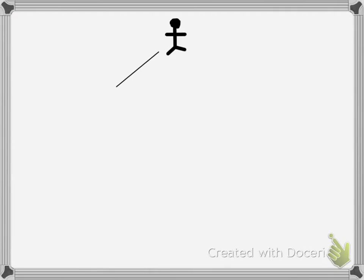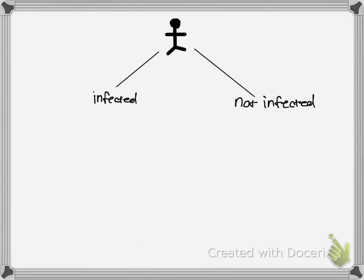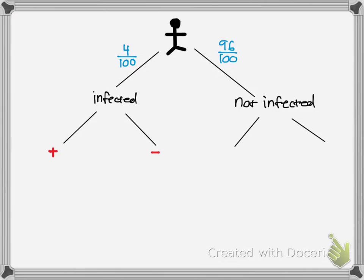So here's the individual, and they either have the disease or they don't — they're infected or not. The prevalence is 4 in 100, so there's a 4 in 100 chance of being infected, which means 96 out of 100 people do not have the disease. On both sides of the tree, if you take the test and you're infected, you can have a positive or a negative result. And if you're not infected and you take the test, you could have a false positive or a negative result.